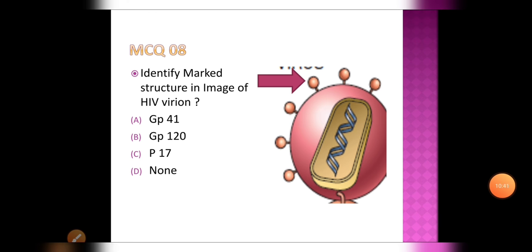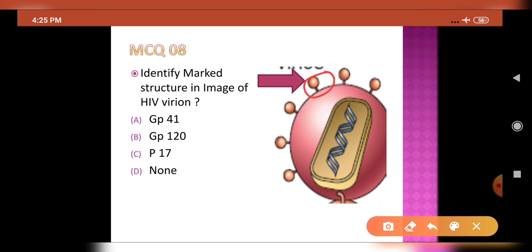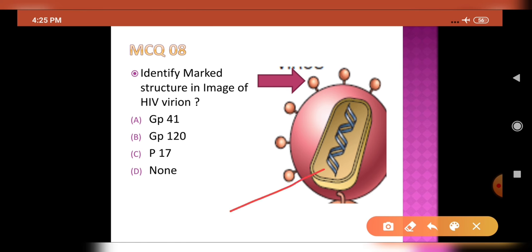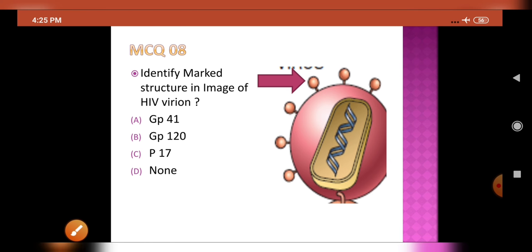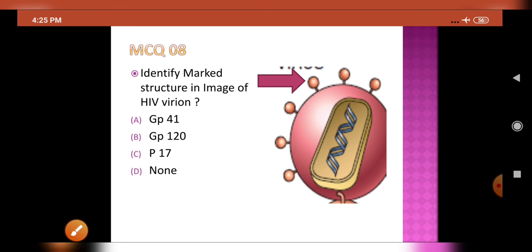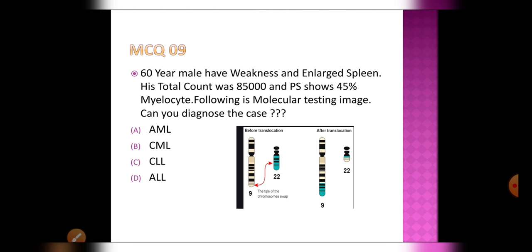Eighth MCQ: Identify the marked structure in the HIV virion image. It is the envelope glycoprotein gp120. With the help of gp120, the HIV virion enters the cell membrane. It is not p17 — p17 is present in the central portion of the virion. The marked surface structure is gp120, through which HIV penetrates the cell membrane.